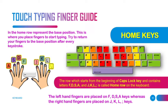From the home row position, it is possible to easily reach all the other keys. For example, the finger on the letter D is used for the letters E and C. Similarly, the finger that rests on the letter F can also reach R, T, G, B, and V.